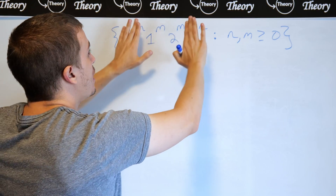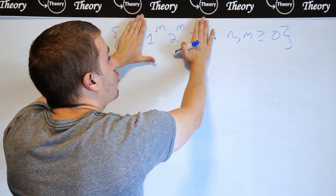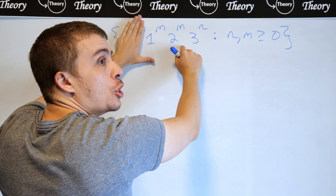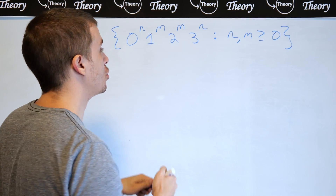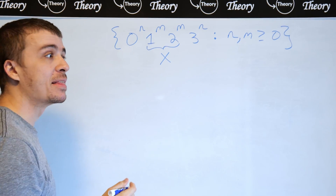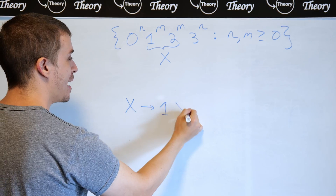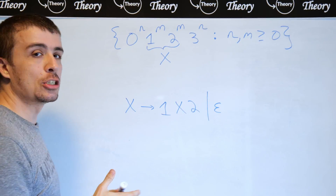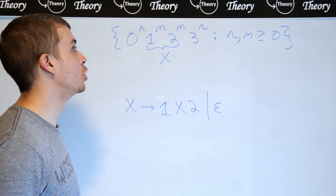The m's, if we look at them in isolation, we can easily make a context-free grammar for that: one on one side, a two on the other side, then quit with the empty string. I'm going to have a variable called X make that part. So X produces 1X2 or empty — essentially the same idea as zeros and ones, but substituting one and two.